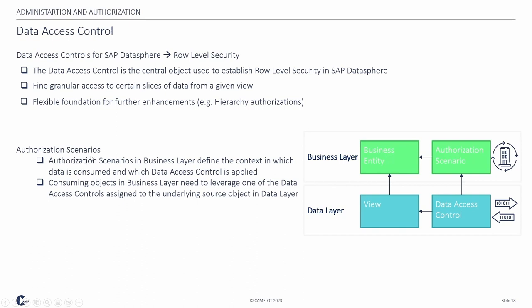The authorization scenario in the business layer defines the context in which data is consumed and which data access control is applied — it is a configuration at the business layer to provide respective access. The consuming object in the business layer needs to leverage one of the data access controls assigned to the underlying source object in the data layer. Simply put: you have a view as baseline, define a data access control to set up access rights, configure those rights per user in the authorization scenario, and the resulting business entity is the data consumption interface provided to users.